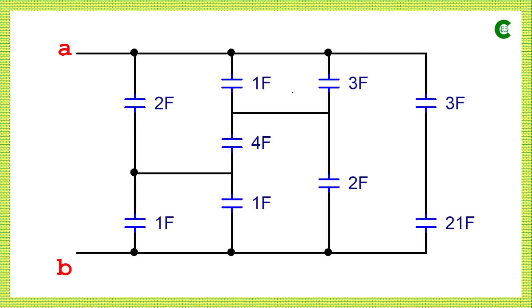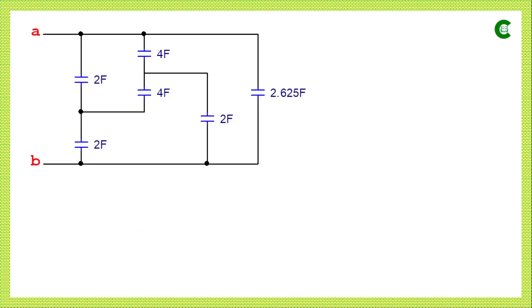Between the 1F and 3F which are connected in parallel, the equivalent capacitance will be simply 4F — they are simply added. Now we need to find the equivalent capacitance between the two capacitors connected in series. For series connection of capacitors, the formula is the same as resistors in parallel: the two values are multiplied in the numerator and added in the denominator.